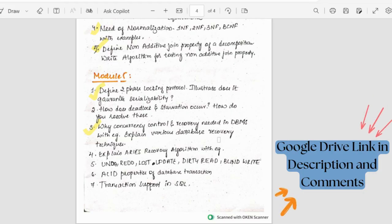Different recovery methods. Then we have Aries algorithm. This is a short question. Then they can ask us the definition of these functions - undo, redo, lost update, dirty read and blind write.